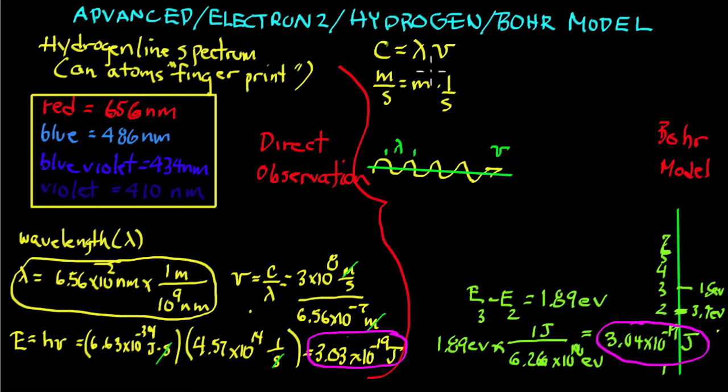The product of these two will always be a constant, the speed of light. Now here's the thing: if you take this red line, the wavelength is 656 nanometers.